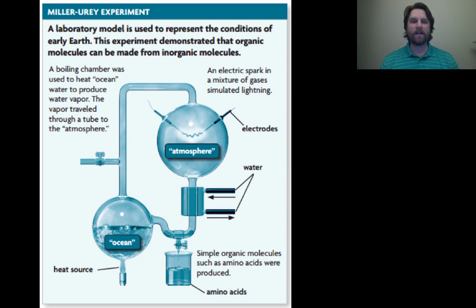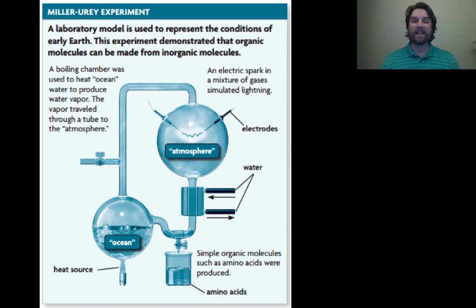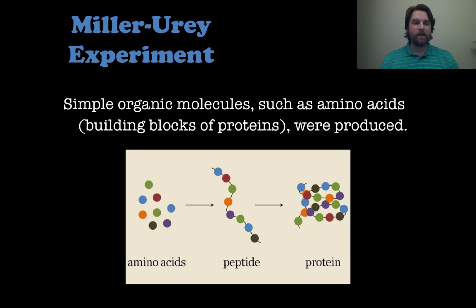They created a really interesting-looking apparatus — a model to show the conditions of the early Earth. They have a heat source underneath some water in the bottom left, so the water represents the ocean, which would be heated to produce water vapor that would go into the atmosphere mixed with other gases. They also had electrodes to simulate lightning. What they found was really interesting: the experiment started producing organic molecules like amino acids, the building blocks of proteins. So they actually proved that the original hypothesis was correct — that the early Earth could produce amino acids and organic molecules.